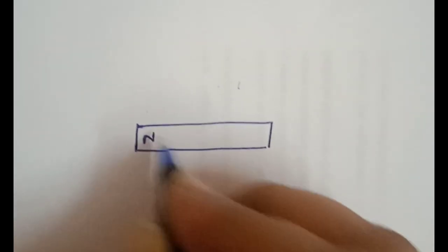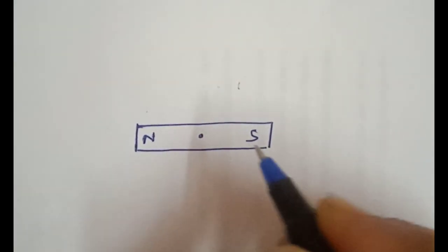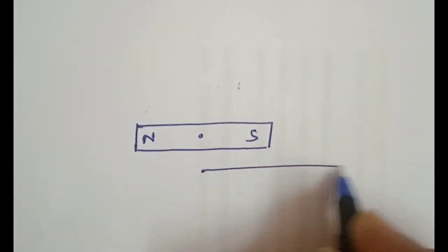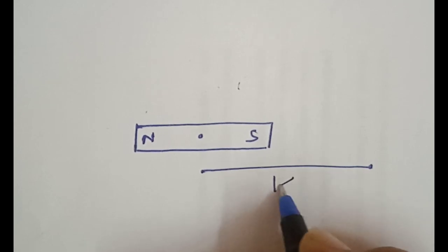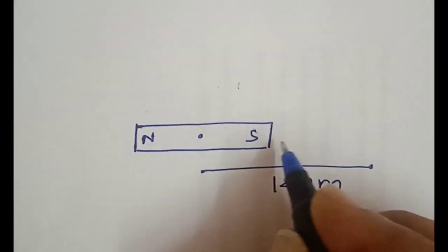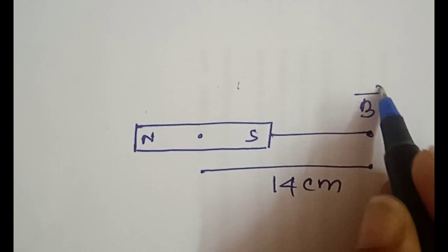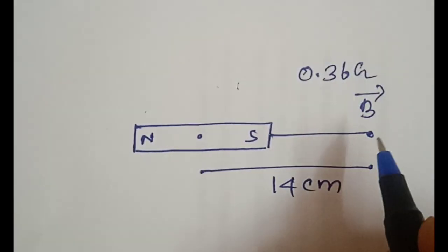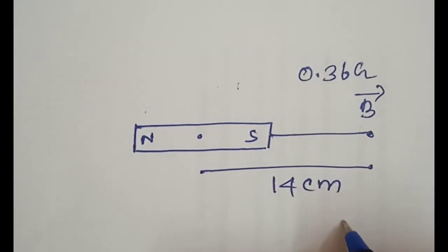One bar magnet is in a north-south direction. The magnet axis null point is at 14 centimeter. The magnetic field is 0.36 gauss and the dip is 0.